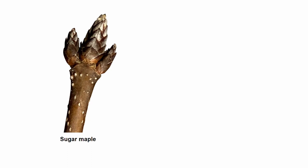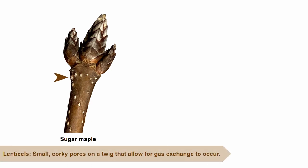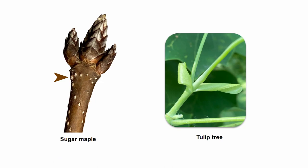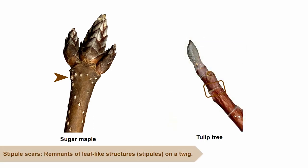There are a few common features that aid with twig identification. Lenticels are pores on a twig that allow for gas exchange to occur between the inside of the twig and the outside air. On this sugar maple twig, the lenticels are the small yellowish-white dots. Some species have more prominent lenticels than others, so this can help a lot when trying to identify a species. Tulip trees are an example of a species that have a pair of stipules — leaf-like structures that will eventually fall off. When they do, the stipules leave behind a stipule scar; in this case, it is a ring all the way around the twig. These stipule scars, being present or not, can distinguish one species from another.